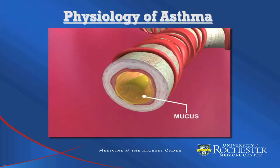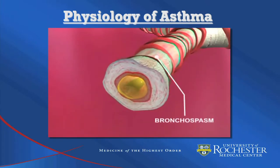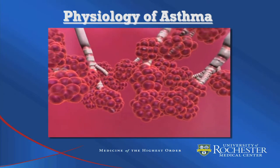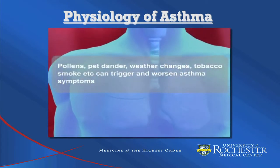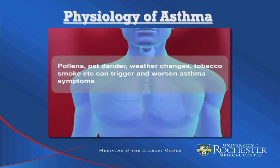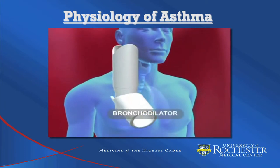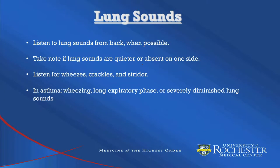Later, the muscle surrounding these airways tightens and air cannot move freely. This is called bronchospasm. The result is shortness of breath, and the air moving through the tightened airways causes a whistling sound known as wheezing. Pollen, pet dander, weather changes, tobacco smoke, etc. can trigger and worsen asthma symptoms in susceptible patients. Short-acting bronchodilator drugs which can be inhaled provide immediate dilation of the constricted bronchi.